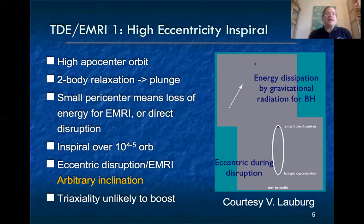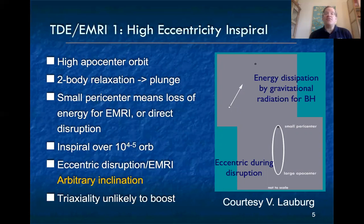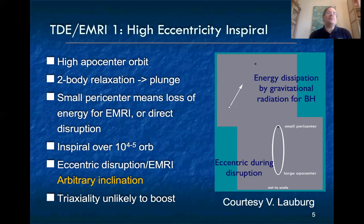In the LISA band, for million solar mass primaries, we might expect thousands or tens of thousands of orbits within the LISA frequency range. This means a lot of precision can be applied to learning about the mass or spin parameter of the black hole, as well as about strong-field gravity. These EMRIs will have arbitrary inclination and relatively high eccentricities, because at the distances involved, the spin of the black hole has no effect. Triaxiality is unlikely to boost these rates, since the dominant contribution comes from distances of roughly a hundredth of the radius of influence of the supermassive black hole, where the potential is quite close to spherically symmetric.